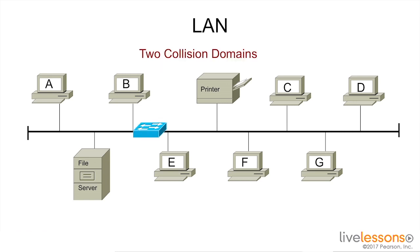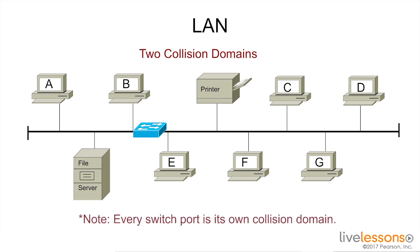If I want to separate my collision domain, and I have a network requirement to create two collision domains, then I need to insert a bridge, or better yet, a switch into my network to divide up my collision domains. That way I have lessened the number of devices in each collision domain, therefore reducing the chance that two stations are going to try to send information at the same time and have a collision.